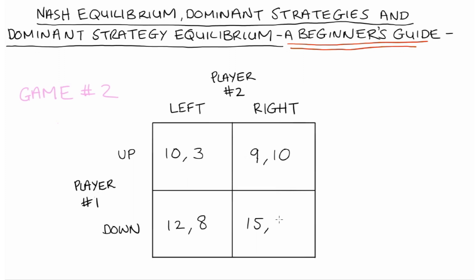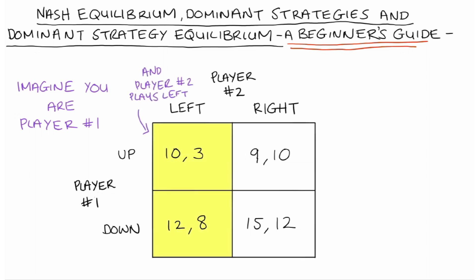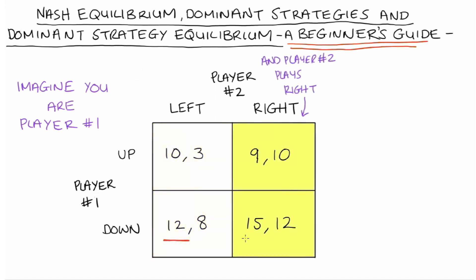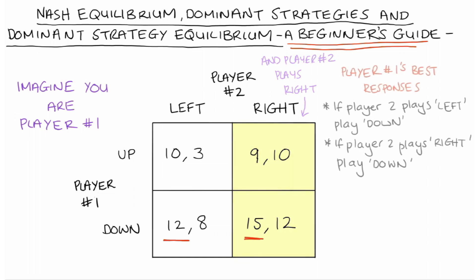Alright, let's think about game number two. In this game, the Nash equilibrium will also be a dominant strategy equilibrium. Let's go straight to finding best responses. Imagine we're player one — if player two plays left, player one could play up and get ten or down and get twelve. Twelve is higher, so player one's best response is down. If player two plays right, player one could play up and get nine or down and get fifteen — down is the best response because fifteen is greater than nine.